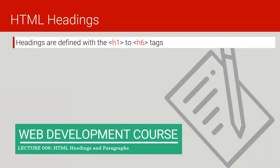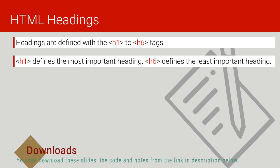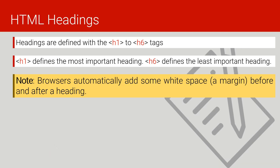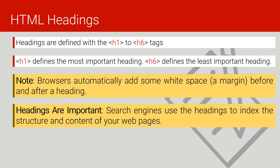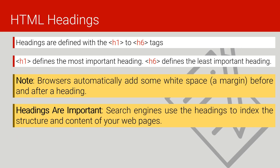HTML headings are defined with h1 up to h6. H1 defines the most important heading and h6 defines the least important heading. You should note that browsers automatically add some white space — margin — before and after a heading. Headings are important: search engines like Google, Yahoo, and MSN use these headings to index the structure of the content in our web pages.